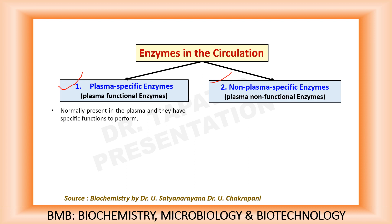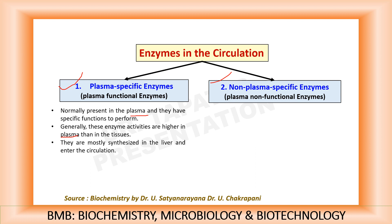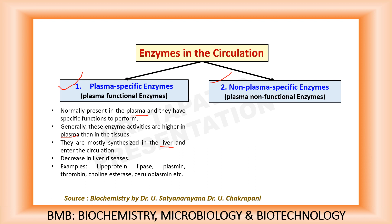Plasma specific enzymes are present in the plasma and they have specific functions to perform. Generally these enzyme activities are higher in plasma as compared to in the tissues. They are mostly synthesized in the liver and enter the circulation, and decrease in liver diseases. Examples are lipoprotein lipase, plasmin, thrombin, cholinesterase, ceruloplasmin, etc.